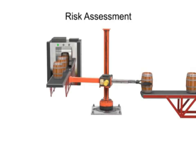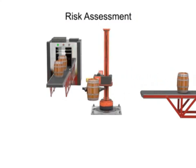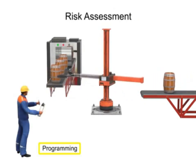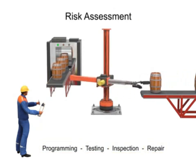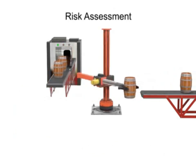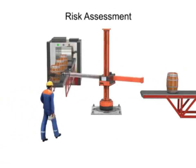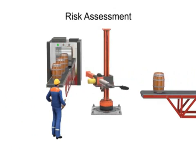The first step in the design process for any robot is a risk assessment of its potential hazards. Studies have shown that most injuries occur not during normal operation, but during times when human interaction is most prevalent — programming, testing, inspection, and repair. By system design, robots rarely need human interaction during normal use and operation. But when programming, testing, inspection, or repair is required, humans are more likely to be in the robot's work area or work envelope.